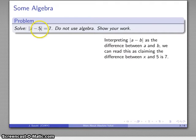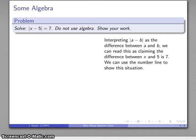So again, what I have here, X minus 5, well I can interpret A minus B absolute value as the difference between A and B. So what this equation is claiming here is that the difference between X and 5 is 7. Well since there is a difference between X and 5, what that says is that X is not equal to 5, and I can use a number line to show the situation.